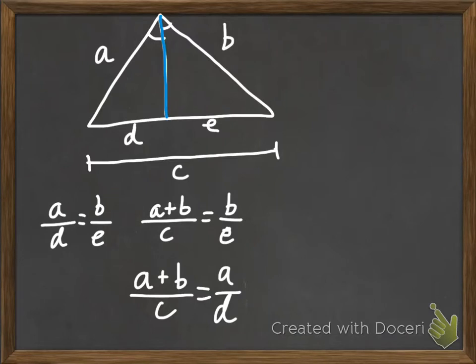We can also take A and B, add them together, and divide them by C, and we'll get B over E. That should have the same ratio. Likewise, if we do A plus B divided by C, we should get A over D as equal.